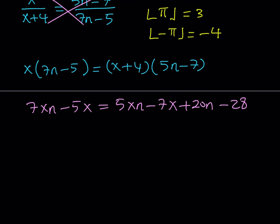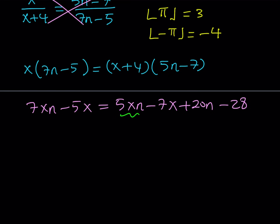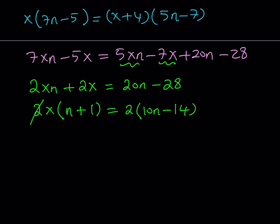Now, collecting all terms with x on the left-hand side: we subtract 5xn to get 2xn, and add 7x to get positive 2x. The right-hand side becomes 20n − 28. Factoring out 2x gives 2x(n + 1), and the right side can be written as 2(10n − 14). Canceling the 2s and dividing by (n + 1), we get x = (10n − 14) / (n + 1).